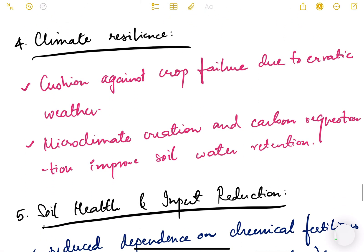Climate resilience - cushion against crop failure due to erratic weather, microclimate creation and carbon sequestration, improved soil and water retention. If you are doing agroforestry, planting trees in your farmland to protect your farm and have some income, it also helps with carbon sequestration and reduces soil erosion. So water retention and soil retention is better with agroforestry.